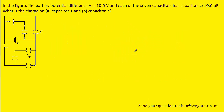If you haven't done so yet, make sure you pause the video and try to answer the question first on your own before listening on. One of the background equations we will need to solve this question is knowing that the charge on a capacitor is equal to its capacitance multiplied by the potential difference across its plates. Also, if we divide both sides of this equation by C, we can solve for the potential difference, and this will also be a useful equation.